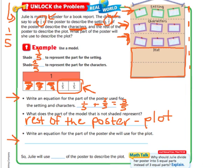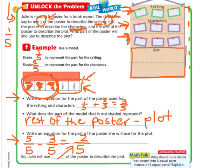Well, to do that, this is just like we did yesterday's lesson. You take your total, which is five-fifths. You're going to subtract what we already used for the setting and the characters. So we're going to subtract our three-fifths. And that will leave us with two-fifths, which we're using for the plot. So Julie will use two-fifths of the poster to describe the plot.